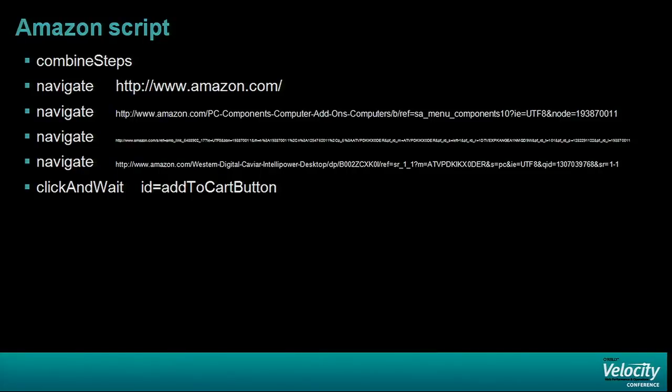The script for Amazon — the combined steps command basically says take all of these and turn it into a single flow. You can also target just a specific part of a flow if you want to measure just one step at the end. In this case I want to compare the full flow of both, with a whole bunch of navigations along the path. The final one is to add to the shopping cart.